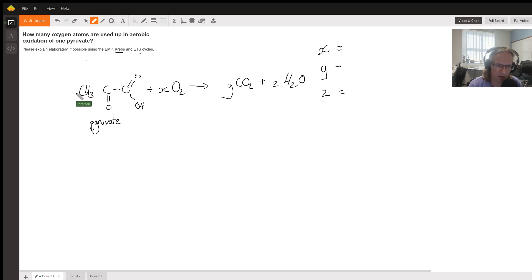If we look at pyruvate, we've got three carbon atoms, so that means for our purposes here y must equal 3—we're going to make three molecules of CO2. How much water are we going to make? Well, we've got four hydrogen atoms, so that means we're going to make two molecules of water.